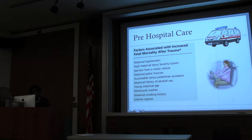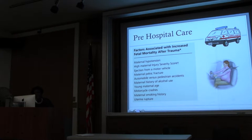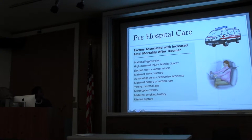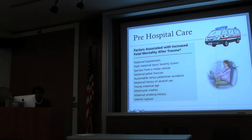The big points are the mechanism of injury, whether or not the patient is restrained, and any prior history such as a smoking history. Predictors of OB complications include blunt abdominal trauma, uterine tenderness, vaginal bleeding, or leakage of amniotic fluid.